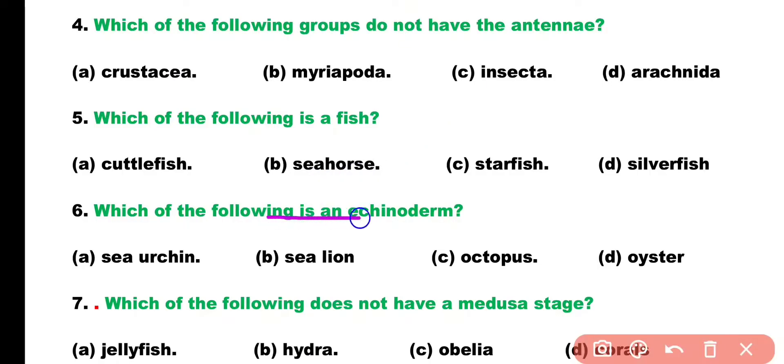Question 6. Which of the following is an Echinoderm? Sea urchin, sea lion, octopus, or oyster? Correct answer is Option A. Sea urchin is an Echinoderm animal. So correct answer is Option A.